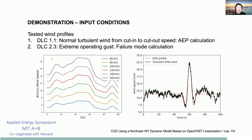The demonstration uses DLC 1.1 and DLC 2.3 as input conditions. DLC 1.1 is normal turbulent wind from cut-in to cut-out speed and is used for calculating annual energy production (AEP). DLC 2.3 includes the extreme operating gust, simulating one of the failure mode calculations.